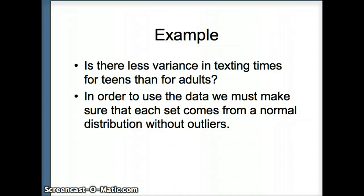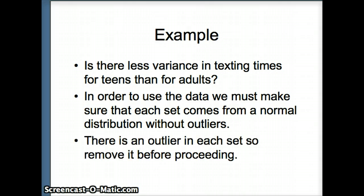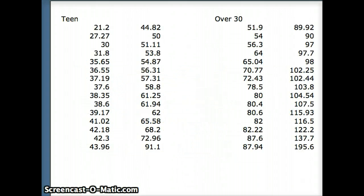And if we're going to use this data, we have to make sure that it comes from a normal distribution, and in particular, there cannot be any outliers. But looking at the data, we do indeed see an outlier in each. So if we're going to proceed using this data, we're going to need to remove it as saying that that outlier does not represent the population in general. So let's take a look at our sample. Here's our teen texting times to text that sentence. And you'll notice this one person is 91 seconds, almost 18 seconds more than the one previous. So that is not representative of the entire sample. We're going to remove the 91.1.